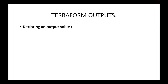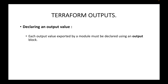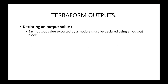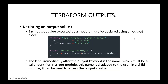In this session we are going to look at how you can declare an output value. We'll look at an example of how we can make use of outputs to display certain information about a resource on the command line itself. You will be creating a separate output block which will have all the necessary information about what you want to expose. Each output value can be exported by making use of an output block.